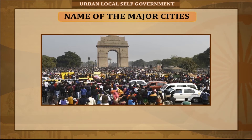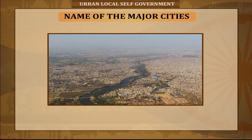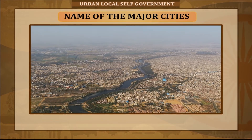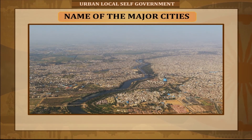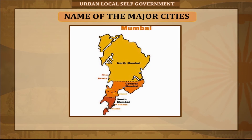Delhi is the second most populous city after Mumbai and the most populous urban agglomeration in India, and the third largest urban area in the world. Urban expansion has caused Delhi to grow beyond the NCT to incorporate towns in neighboring states, with a total population of about 25 million residents as of 2014. After Mumbai, Delhi has the second highest number of billionaires and millionaires in India.